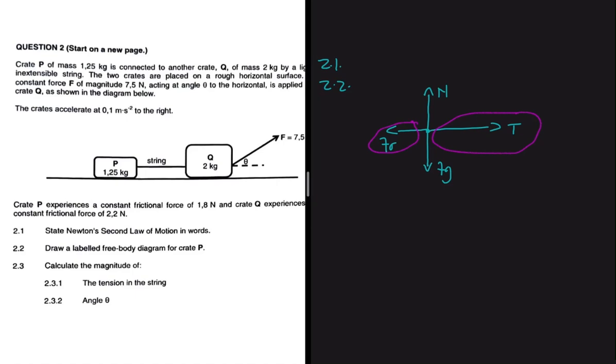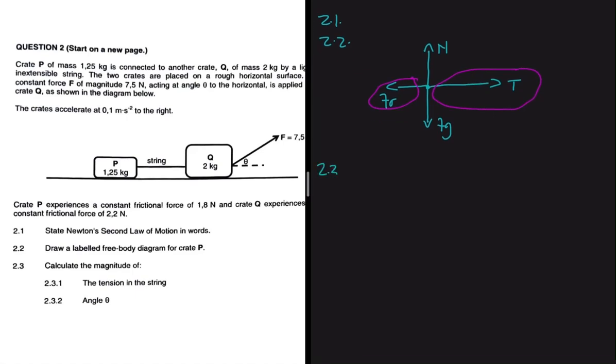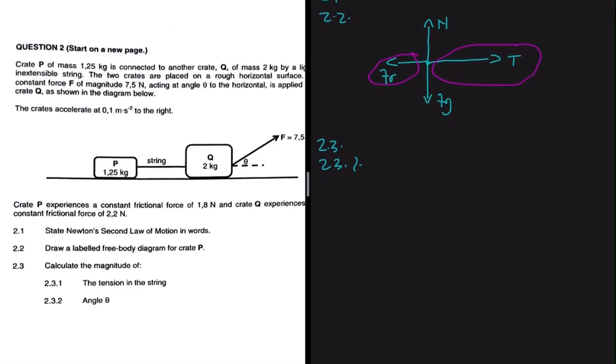Now 2.3.1: Let's calculate the magnitude of the tension in the string. We want the magnitude of the tension in the string. In 2.2 we were asked to draw a labeled free body diagram for crate P, so let's try finding the tension by using crate P.